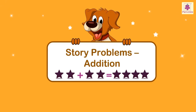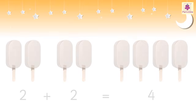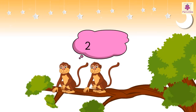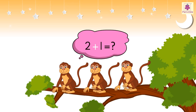Story problems edition. Let us look at some addition story problems. There are two monkeys on a tree. One more monkey joins in. How many monkeys are on the tree now? We need to add the two numbers. Two plus one is equal to three. So now there are three monkeys on the tree.